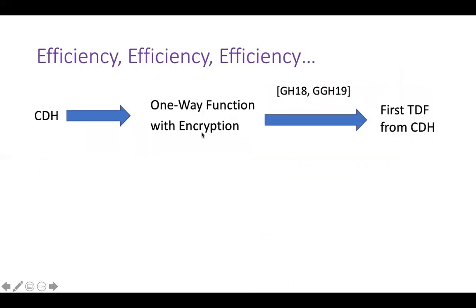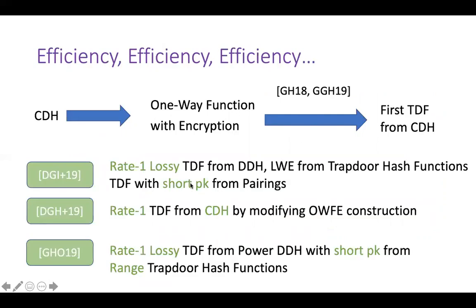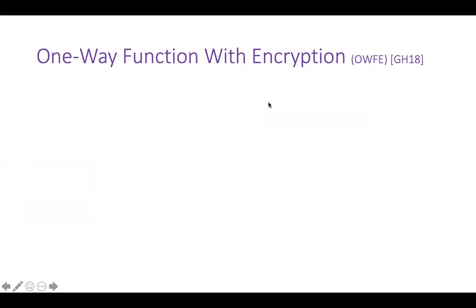I would like to mention that there are other papers that also work towards improving efficiency of this framework. For example, Garg and Hajiabadi proved that one-way function with encryption implies trapdoor functions. And later on, three more papers worked towards improving efficiency of trapdoor functions — in particular, improving the public key size and the output size. Our efficiency improvements also lead to trapdoor functions with shorter public keys.